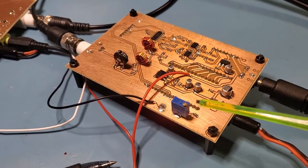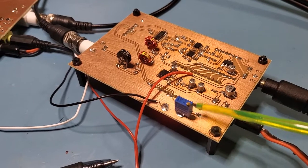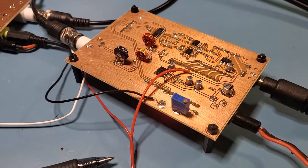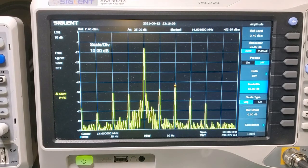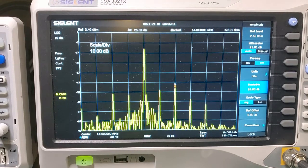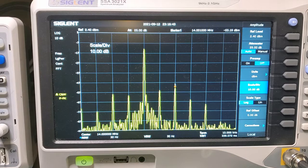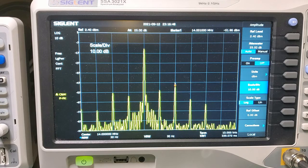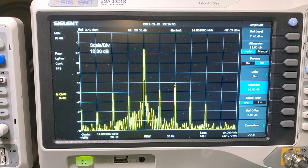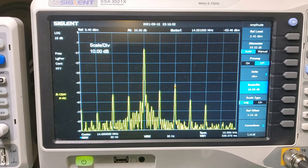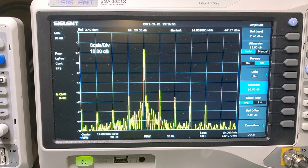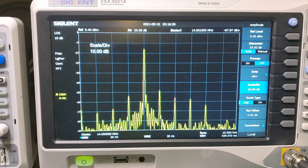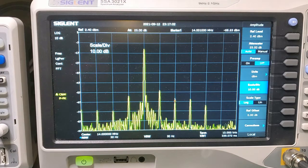So let's have a look now at the effect of adjusting this IQ balance multi-turn pot. You can see the highlighted signal there is the suppressed upper sideband signal. And you can see that as I adjust the multi-turn trim pot, that suppressed upper sideband signal is diminishing. But note that it's not affecting any of the harmonic products at all.